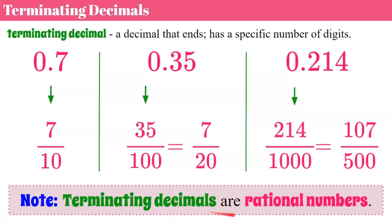Terminating decimals are rational numbers. I want you to focus on the fact that we're saying they're rational numbers, and part of the word rational is ratio. All terminating decimals can be written as fractions, and a fraction is a ratio of a part to a whole. So we see the word ratio in rational numbers, which means if it's a rational number, you need to be able to express it as a ratio — and we can do that with terminating decimals when we write them as a fraction.